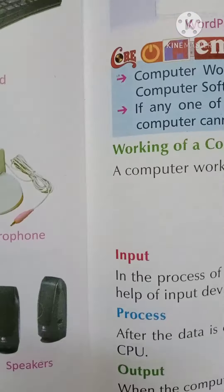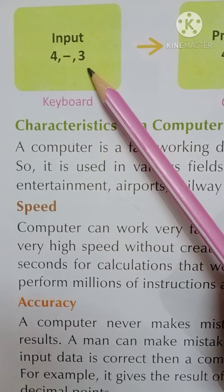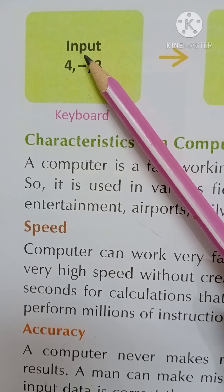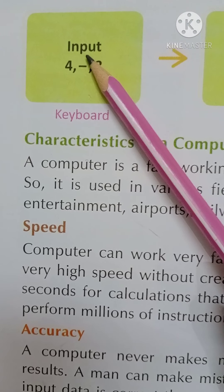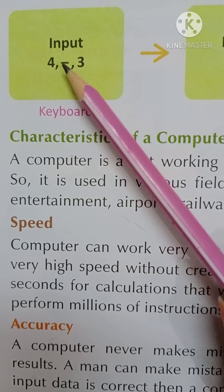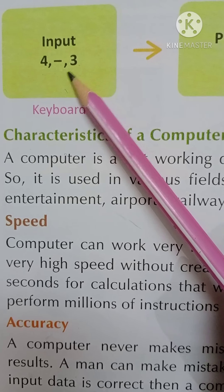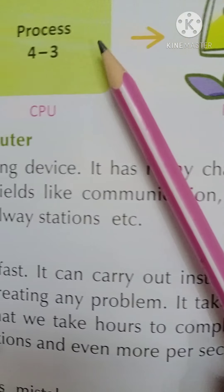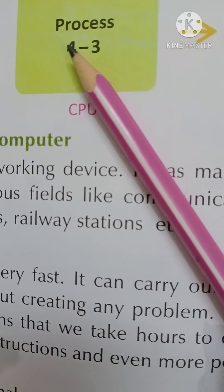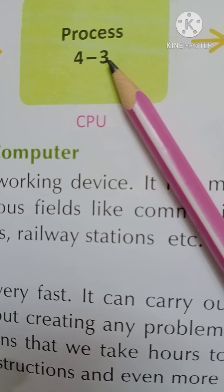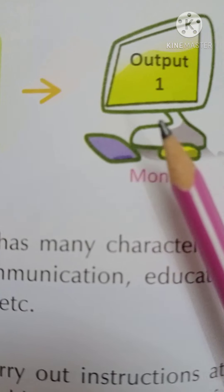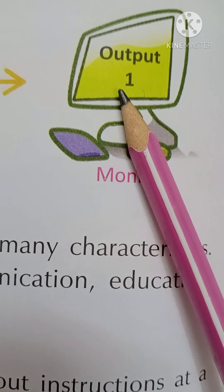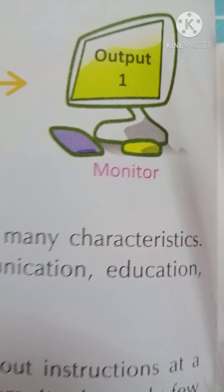For example, if we have 4 minus 3, we type this in as input. Then we process it — 4 minus 3. Then we get the result as output: 1.